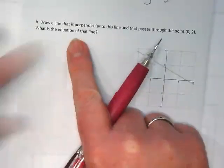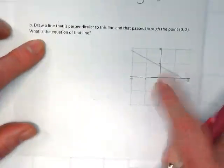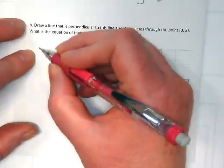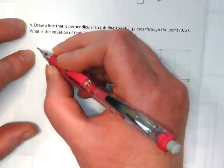Down here we're being asked to draw a line that's perpendicular to the same line. We already know that the slope of this line is negative 1 over 2. And the opposite reciprocal of negative 1 over 2 is 2.